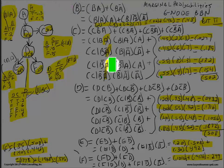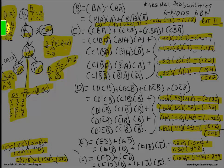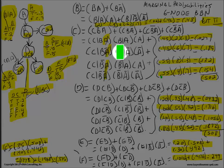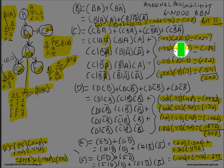Continuing: probability of C given B is 0.45, times probability of B given A which is 0.2, times probability of A which is 0.3. Multiply these together, get 0.027. Then again, probability of C given B is 0.45, times probability of B given not-A which is 0.6, times probability of not-A which is 0.7. Multiply these together, get 0.189.